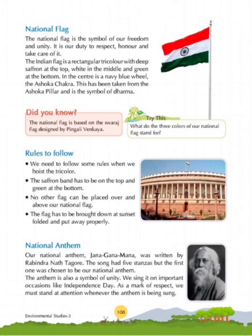Rules to follow: We need to follow some rules when we hoist the tricolor. The saffron band has to be on the top and green at the bottom. No other flag can be placed over and above our national flag. The flag has to be brought down at sunset, folded, and put away properly.